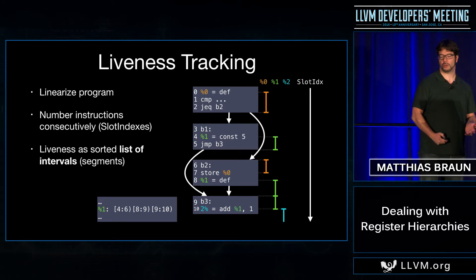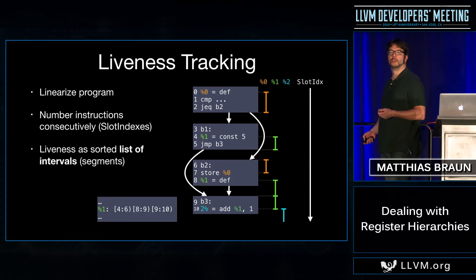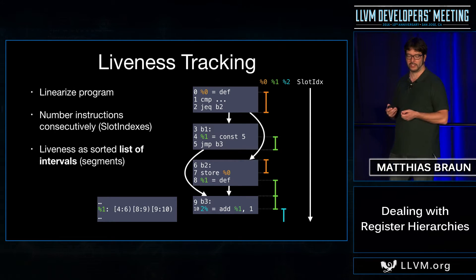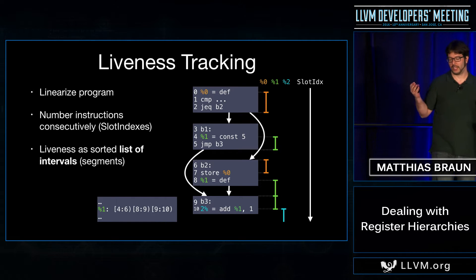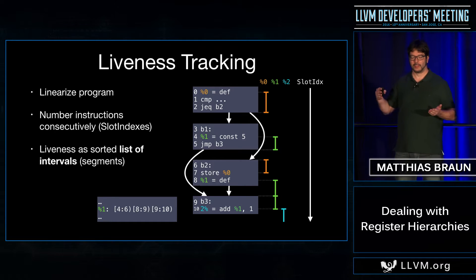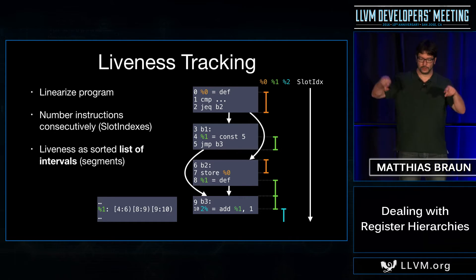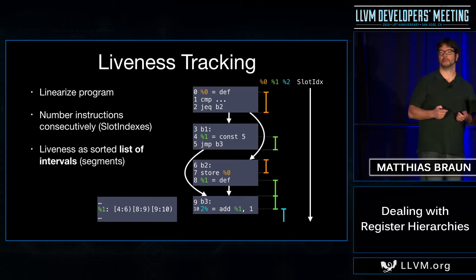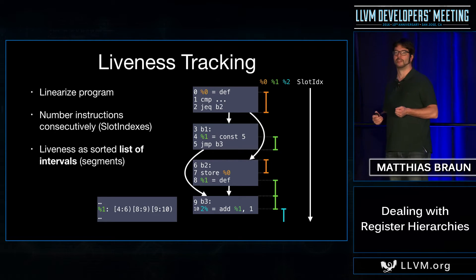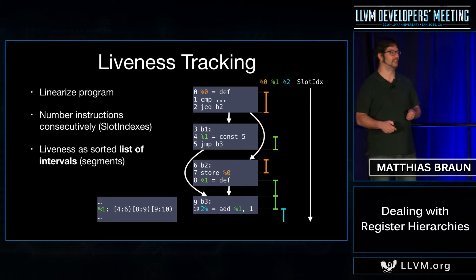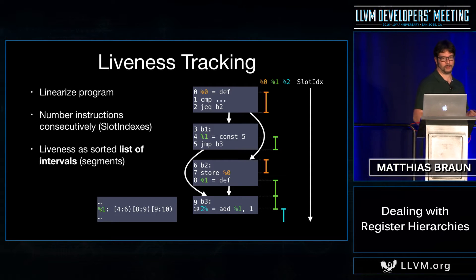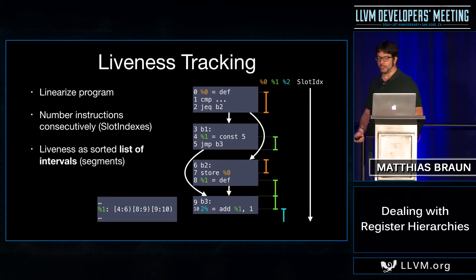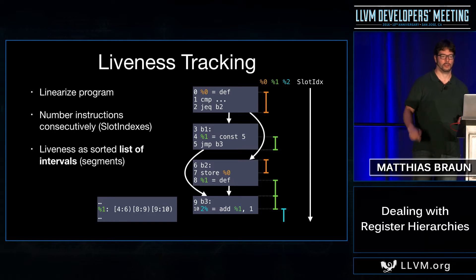In this example, the green virtual register percent-one gets assigned in the second basic block b1 and lives to the end of that block. Basic block b2 doesn't need the value at the beginning. If you look at the control flow, we're coming from the top where it's not assigned yet, and only at the end of b2 does percent-one become live again. There's a second pseudo definition at the beginning of b3 because we track each value as a segment, similar to SSA form but without phi functions. In the end we have three segments stored as a sorted list of intervals.